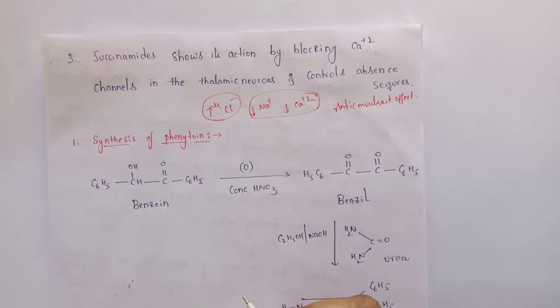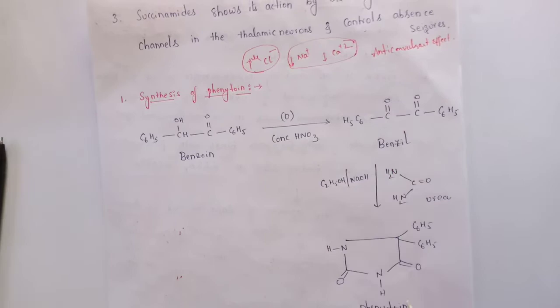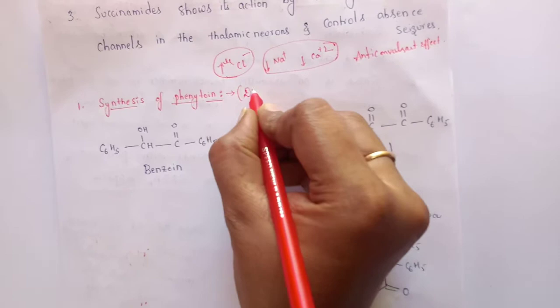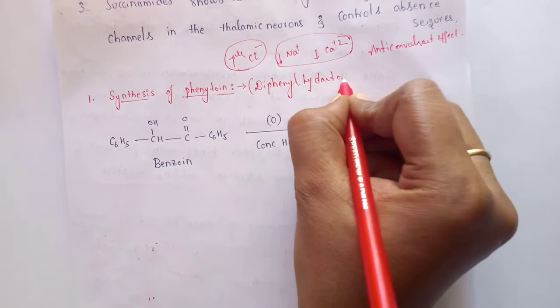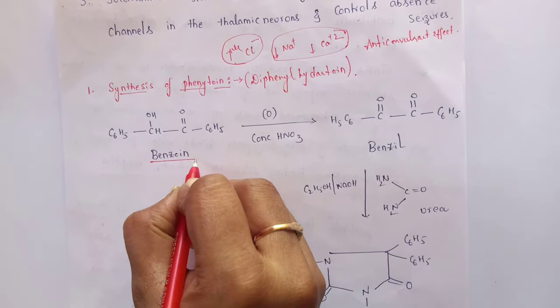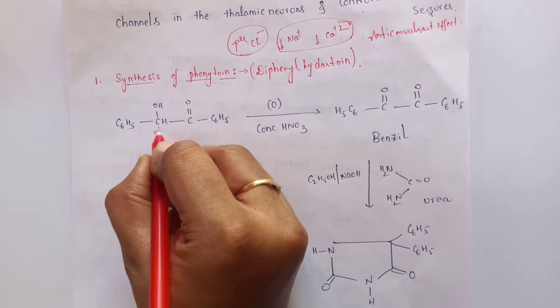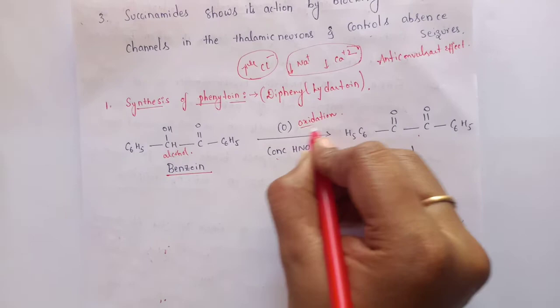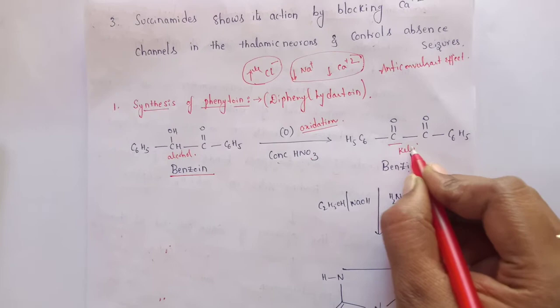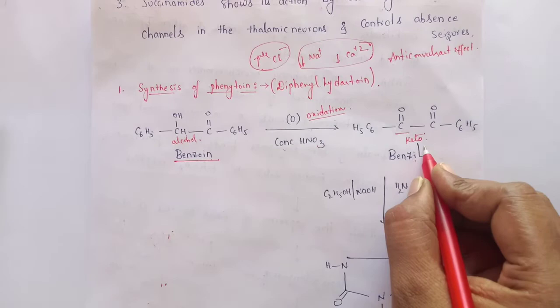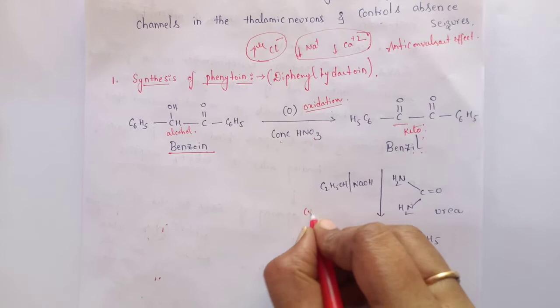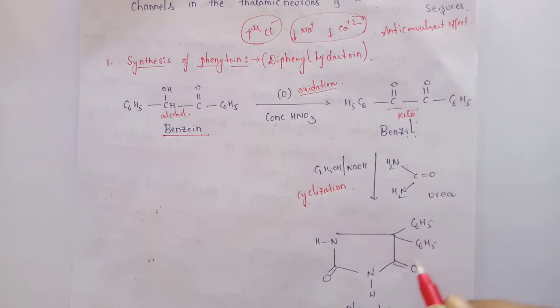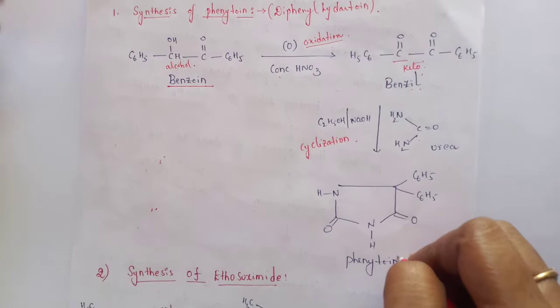Coming to the synthesis of important drugs — first is phenytoin (diphenylhydantoin). The starting material is benzoin, which consists of an alcohol group. Benzoin undergoes oxidation in the presence of concentrated nitric acid, removing two hydrogen atoms and converting into a ketone — forming benzil. Benzil then undergoes cyclization in the presence of urea to give phenytoin (diphenylhydantoin).